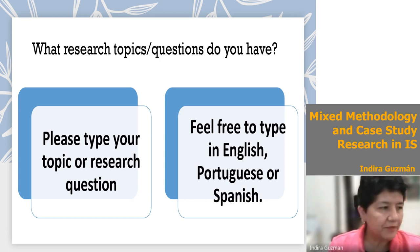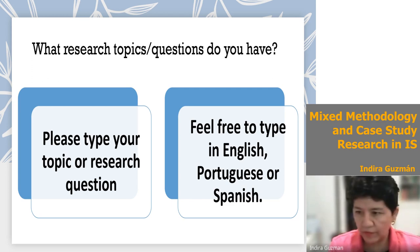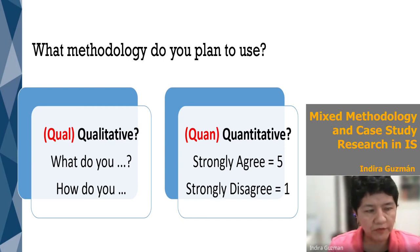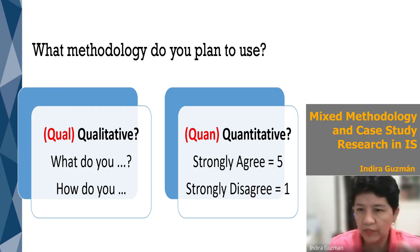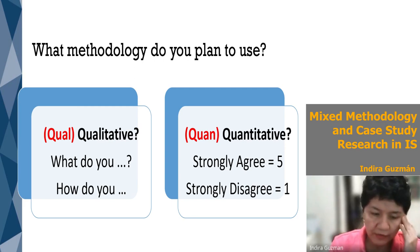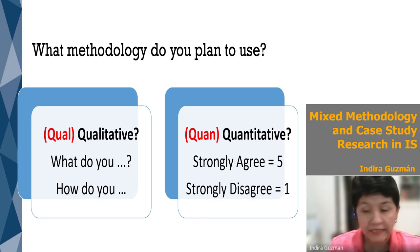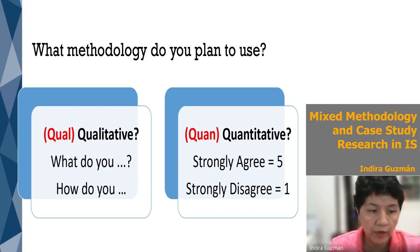We'll get back to your topics, so don't worry. Think about what methodology you plan to use — qualitative or quantitative. With qualitative methods, your research questions are open: what happened or how did it happen. With quantitative methods in social science, you typically use surveys with Likert scales, say strongly disagree to strongly agree.